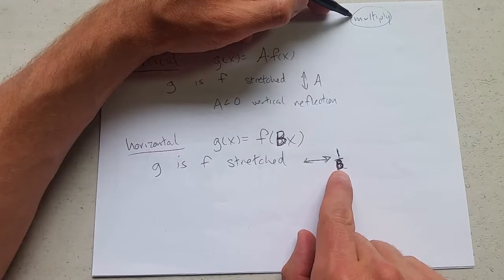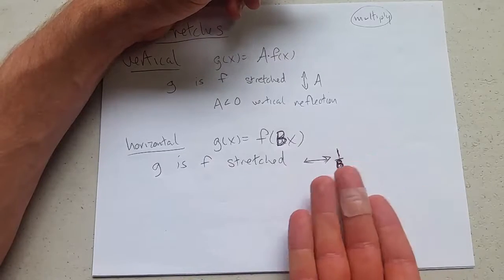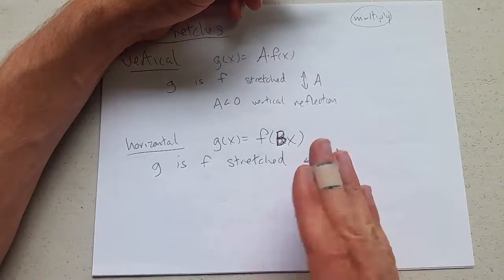What happens if b is negative? Then you're going to take all your x-coordinates and make them negative. So it's going to be a vertical—